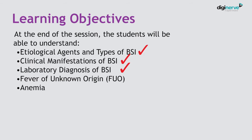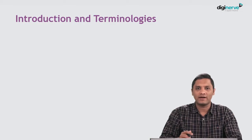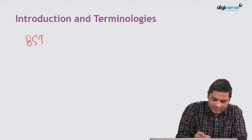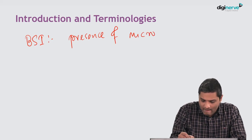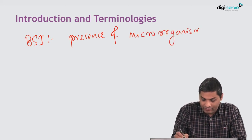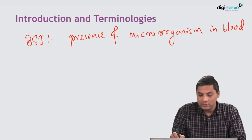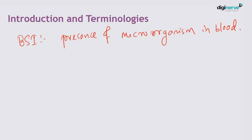We will also summarize the importance of fever of unknown origin and anemia. What do you mean by bloodstream infection? It refers to the presence of microorganisms in blood. Blood is the element which goes into every organ — every organ is supplied by blood vessels. So if you have organisms present in blood, that may have serious consequences.